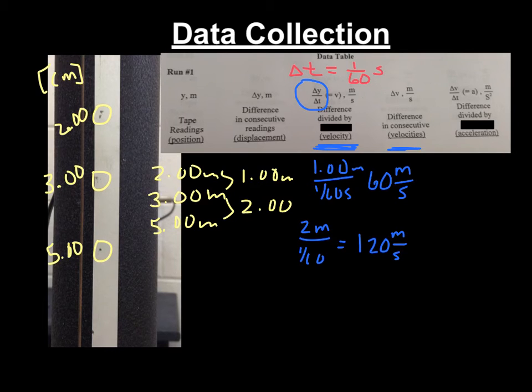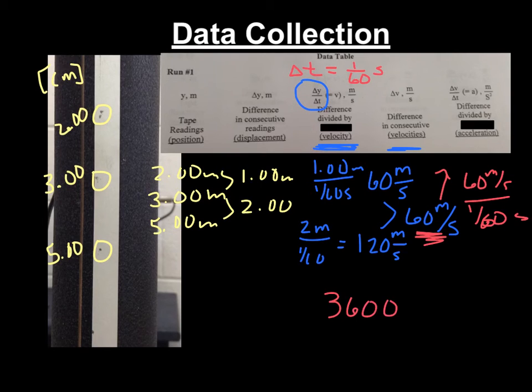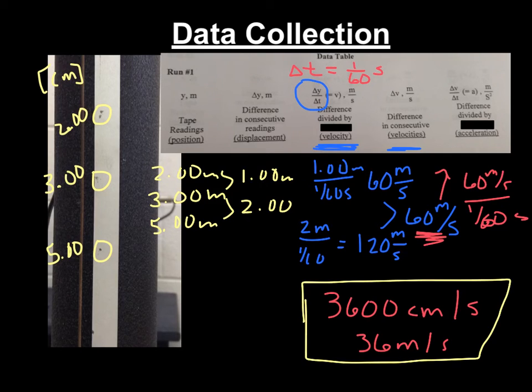So as we move to the difference in velocities, you can see that the difference in velocities is 60 meters per second. And then going to acceleration, which is change in velocity right here over change in time, you get 60 meters per second over 1 over 60 seconds, your time interval, which leads to an acceleration, change in velocity over change in time, of 3600 centimeters per second, or 36 meters per second. So what this tells you is that when I did this experiment, I was not on Earth. But you will be on Earth, so hopefully your value will be much, much closer to the actual acceleration due to gravity for Earth.